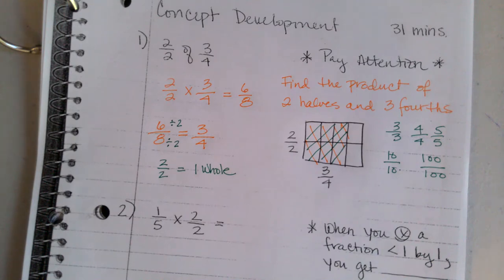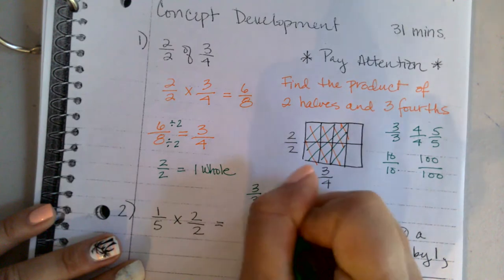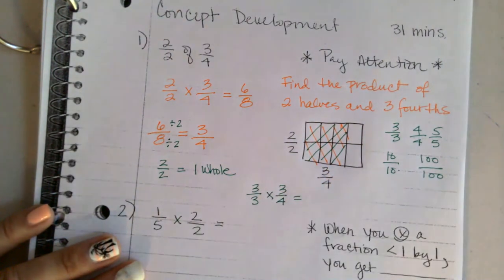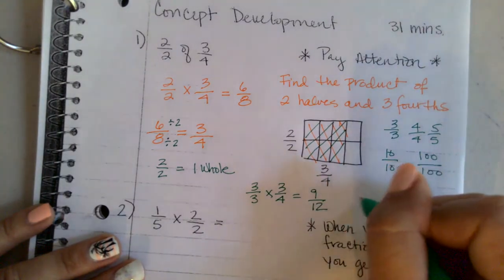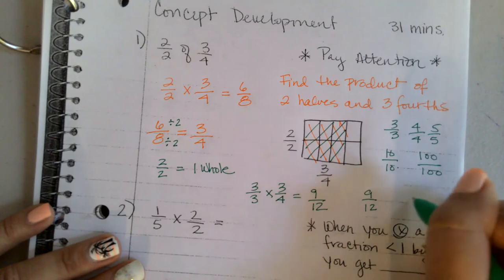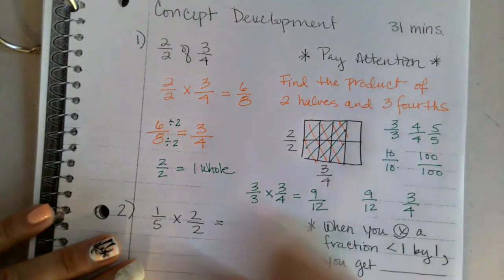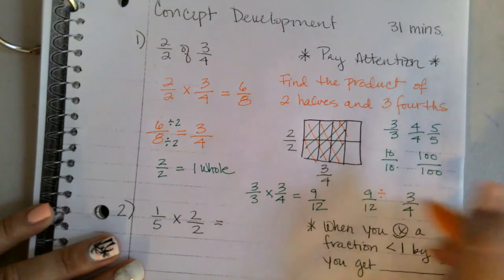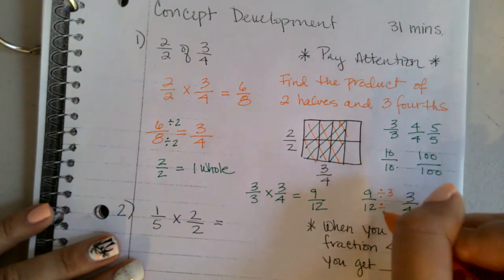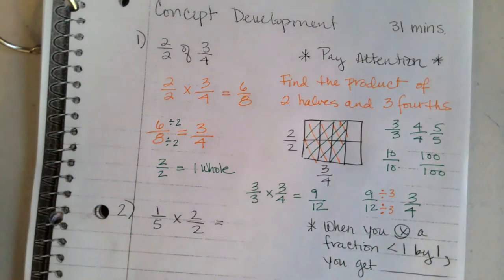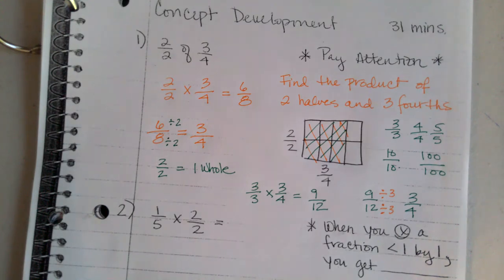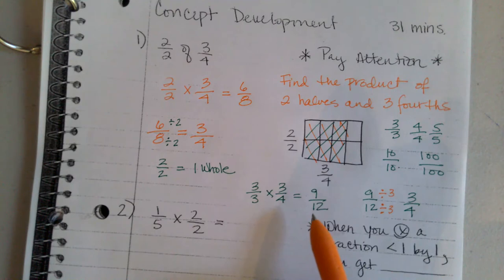Let's try three-thirds times three-fourths. You get nine-twelfths. If you divided nine by three you get three, and twelve by three you get four — so nine-twelfths simplifies to three-fourths. The product nine-twelfths is still equal to three-fourths. Three-thirds equals one, so we got another product equal to three-fourths.